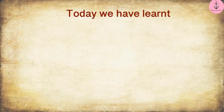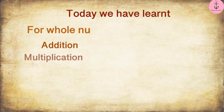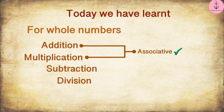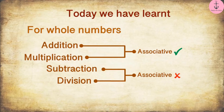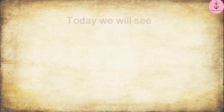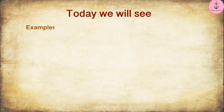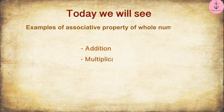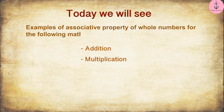Today we have learnt that addition and multiplication of whole numbers are associative, but subtraction and division of whole numbers are not associative. In the next video, we will see some examples related to this topic. Today, we will see examples of associative property of whole numbers for the following mathematical operations.